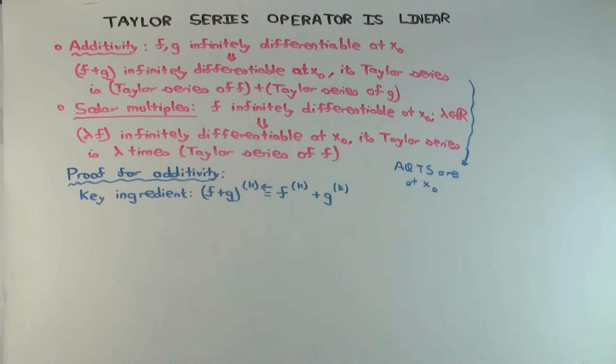Scalar multiples says if f is infinitely differentiable at x0 and lambda is a real number, then lambda times f is also infinitely differentiable at x0 and its Taylor series is lambda times the Taylor series of f.